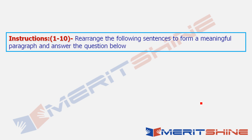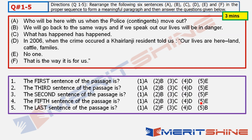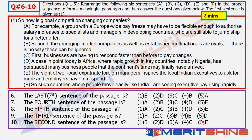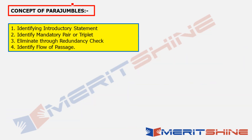The instruction for questions 1 to 10 is to rearrange the following sentences to form a meaningful paragraph and answer the questions below. This is a Parajumble question. There are two sets: questions 1 to 5 and questions 6 to 10. Read the directions properly and then pause the lecture for 3 minutes for each set. Done? Now let's move on.